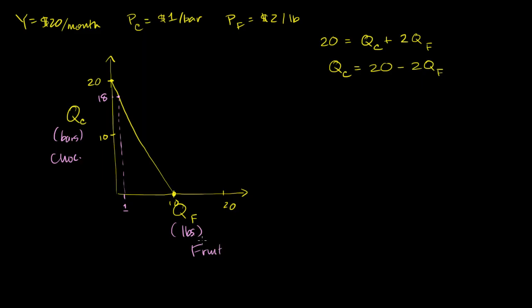We know we have this idea of an indifference curve — there are different combinations of chocolate and fruit to which we are indifferent, meaning we get the same exact total utility, and we can plot all of those points. So let's say I'm indifferent between any of these points. For example, I could have 18 bars of chocolate and one pound of fruit, or I could have 4 bars of chocolate and roughly 8 pounds of fruit — I'm indifferent; I get the same exact total utility.